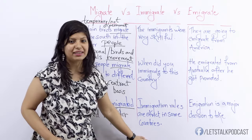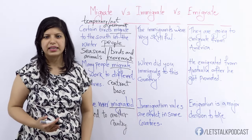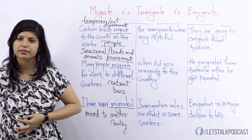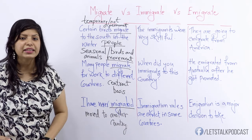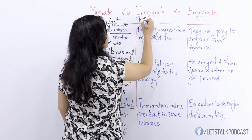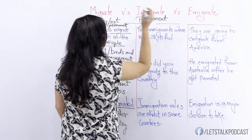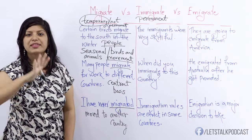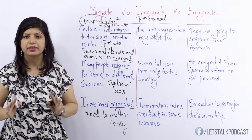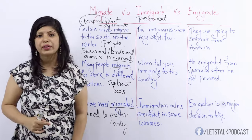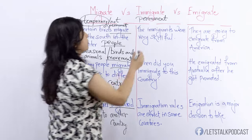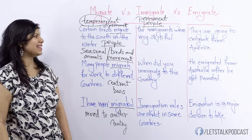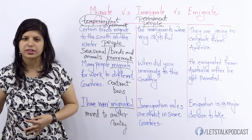Let's look at the next one: to immigrate. So what does it mean to actually immigrate? Immigrate means to move in. And the next important thing to remember is to immigrate is permanent — that's the major difference between migrate and immigrate. Migrate is temporary whereas to immigrate is permanent, for good. Another thing to remember: immigration happens only with people. Birds and animals do not immigrate. The noun form of immigrate is immigration.